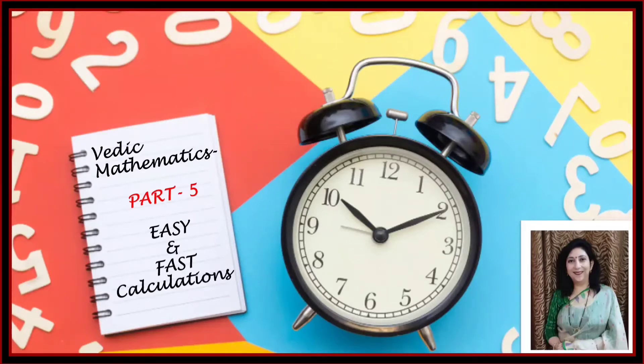In my Vedic Mathematics Part 4 video, I had told you how we can multiply a number with a number having just 9 in it, like multiplying with 9 or with 99 or with 999 and so on. So there were three types that we had discussed. Let us just recall them.